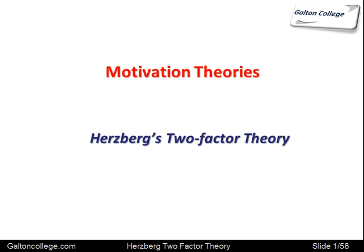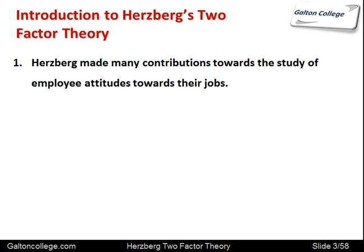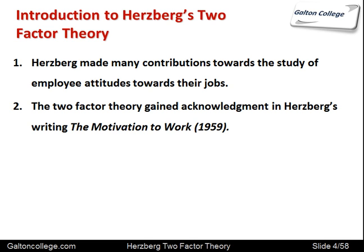Herzberg made many contributions towards the study of employee attitudes towards their jobs. He was concerned about the way employees saw their work, what their attitudes were, and what determined their attitudes to their employment and their particular tasks. The two-factor theory gained acknowledgement in Herzberg's writings, The Motivation to Work, which was published in 1959. The theory was developed by Frederick Herzberg in 1958.